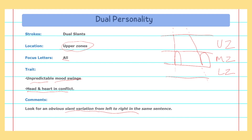People with dual personality face challenges in maintaining relationships due to fluctuations in their emotions. If you are in a relationship with someone who has a dual personality, you should approach them with empathy, compassion, open communication, and a great deal of patience.